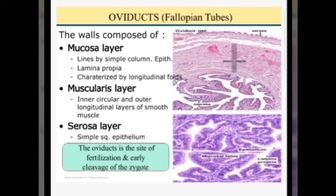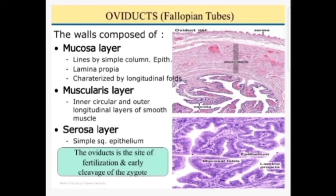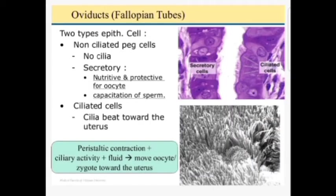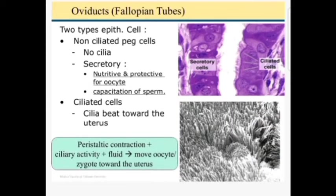As regards the muscular layer, there are two layers: inner circular and outer longitudinal layers of smooth muscle. The outermost covering is the serosa, which is actually the visceral layer of peritoneum and consists of loose connective tissue covered by simple squamous epithelium called mesothelium. In the oviduct there are two types of epithelial cells: non-ciliated peg cells, which are secretory cells with secretory granules in the cytoplasm — nutritive and protective for the oocyte — and ciliated cells whose cilia beat towards the uterus.